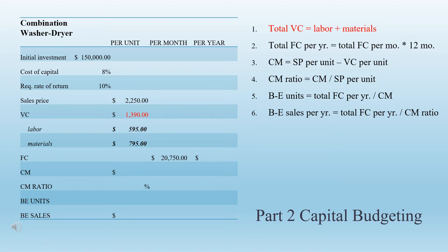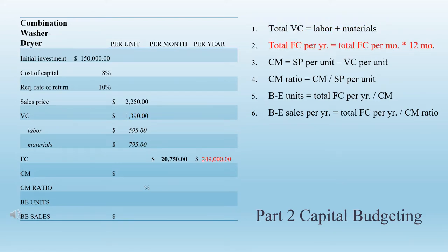Step 1: calculate the total variable costs by adding labor and materials for a total of $1,390. Step 2: calculate the total fixed cost per year by multiplying the total fixed cost per month by 12 months for a total of $249,000. Step 3: calculate the contribution margin by subtracting the variable cost per unit from the sales price per unit for a total of $860. Step 4: calculate the contribution margin ratio by dividing the contribution margin by the sales price per unit for 38%.